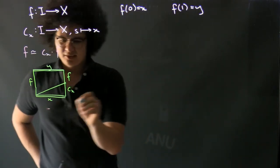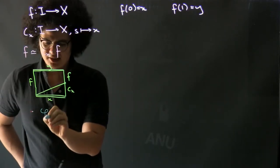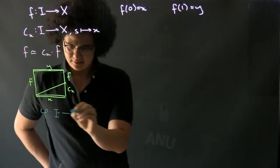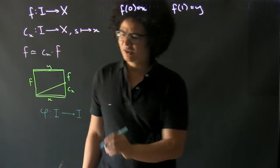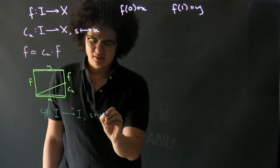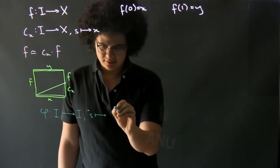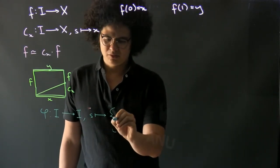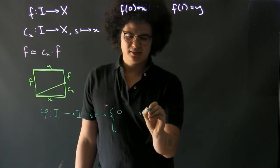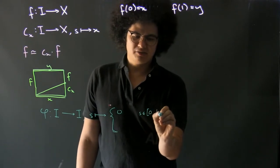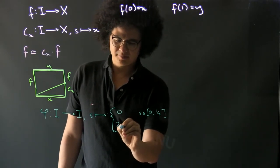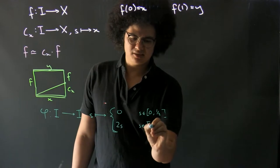This homotopy comes from a reparametrization — the map from the interval to itself. The reparametrization sends a point in the interval to 0 if s is in the first half of the interval, and then we send it to 2s if s is in the second half of the interval.